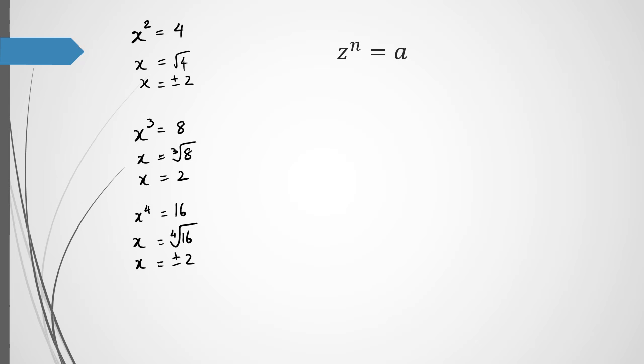Now in complex numbers, you're going to have zⁿ equals a, where a is a complex number, and you're trying to find another complex number to the power of something that equals a itself. For example, this could look like z to the power of 3 equals 2 plus i, so you're looking for three roots that multiply to give 2 plus i. Or you could have z to the power of 4 equals negative 16, meaning you're looking for four roots.